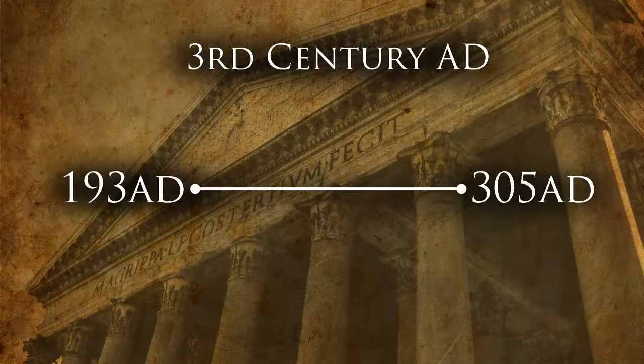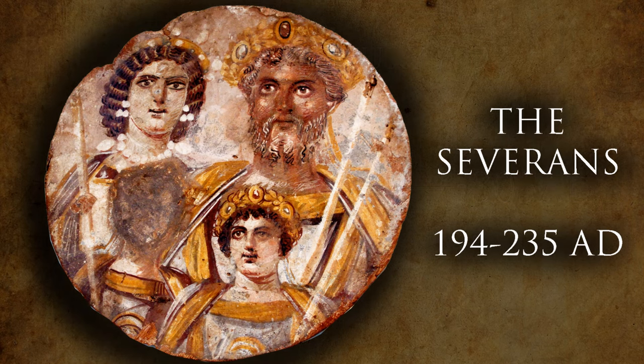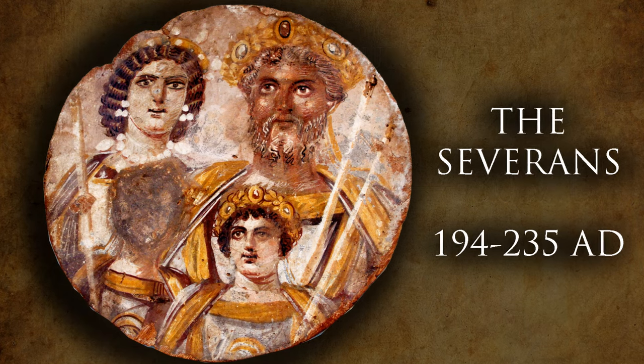If we want to be correct about it, the 3rd century AD is the time period between 201 and 300 AD, but if we want to get a bigger picture of this crisis period, we need to stretch our timeline a little bit — starting at December 31st, 192, as Emperor Commodus, the last of the Antonine emperors, lies dead on the floor of his private bath. The fall of a long-lived dynasty, such as the Antonines, is generally followed by a civil war, and this is exactly what happened. Out of a quick and bloody civil war, a new dynasty rose to power: the Severans, founded by Septimius Severus.